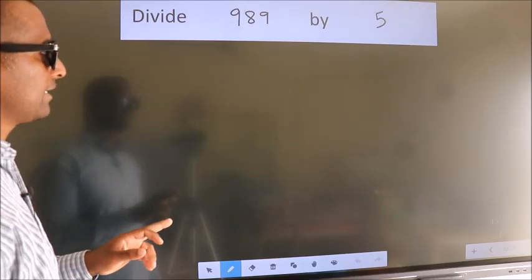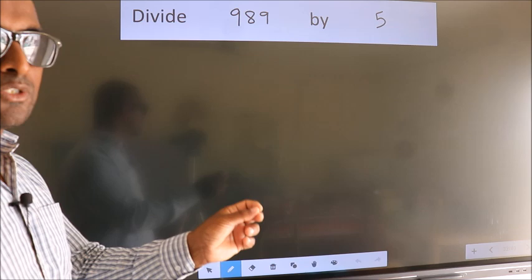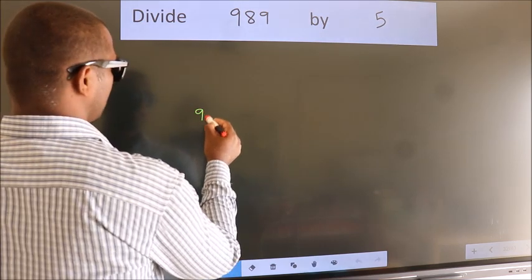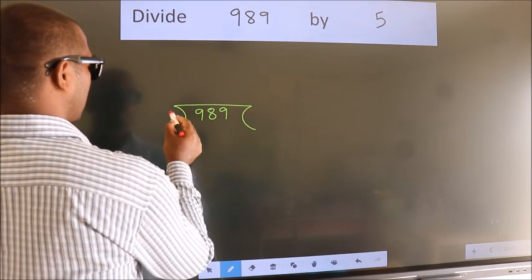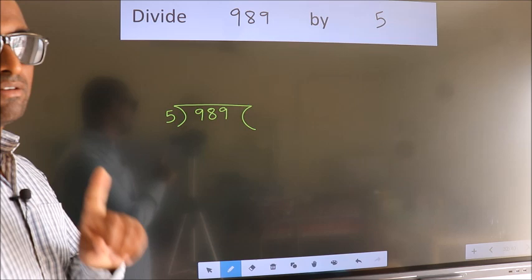Divide 989 by 5. To do this division, we should frame it in this way. 989 here, 5 here. This is your step 1.